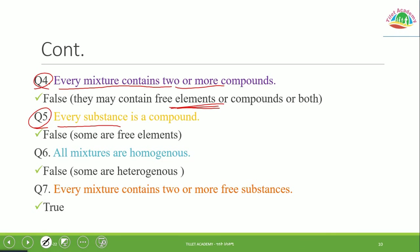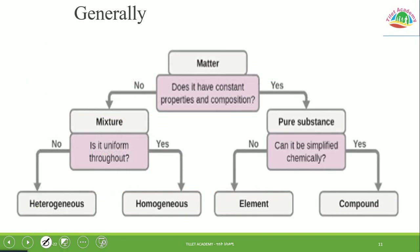Question 6: Are all mixtures homogeneous? That is FALSE — a mixture can be either homogeneous or heterogeneous. Question 7: Does every mixture contain two or more free substances? TRUE — a mixture retains the distinct identity of its component substances, which can generally be detected or separated.